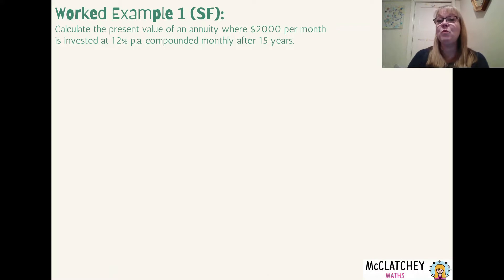Okay let's get into some worked examples. I'm going to show you one example using each context. Our first one is a simple familiar type of question. Calculate the present value of an annuity where $2,000 per month is invested at 12% per annum compounded monthly after 15 years. Why is this a simple familiar question? Because they tell you which formula to use. So firstly we should always write the formula so we're going to select that formula from our formula sheet.